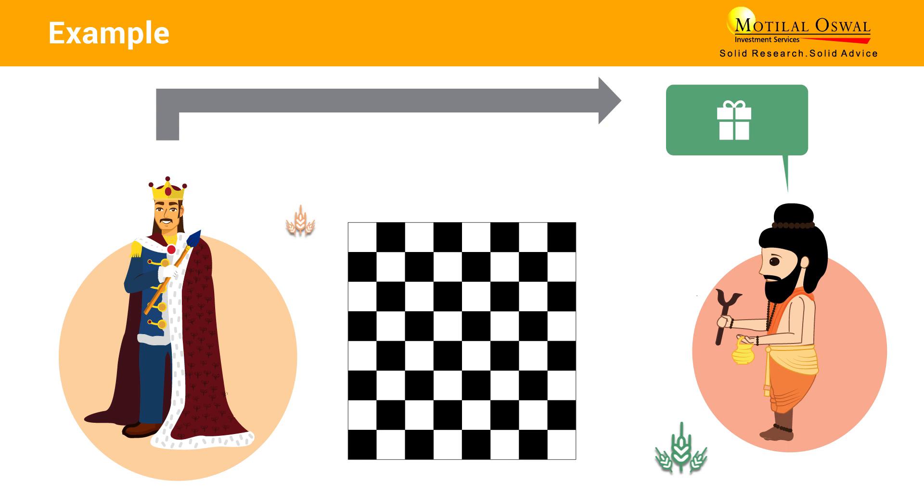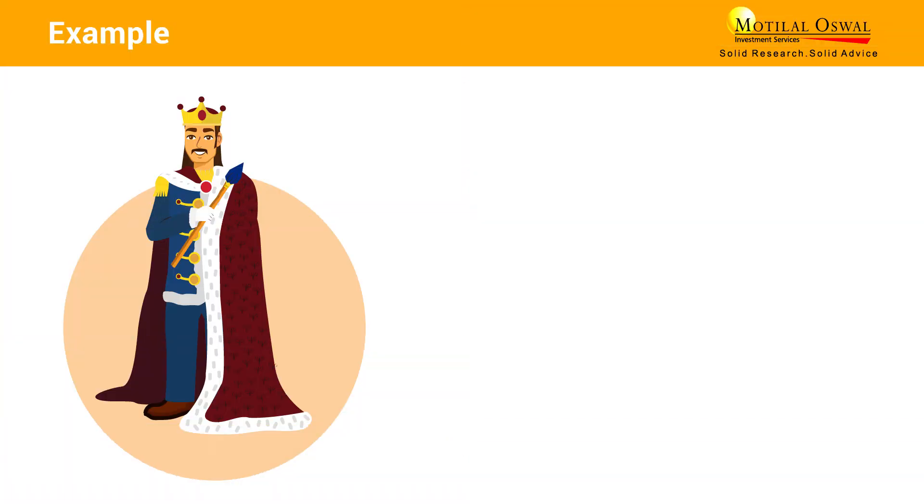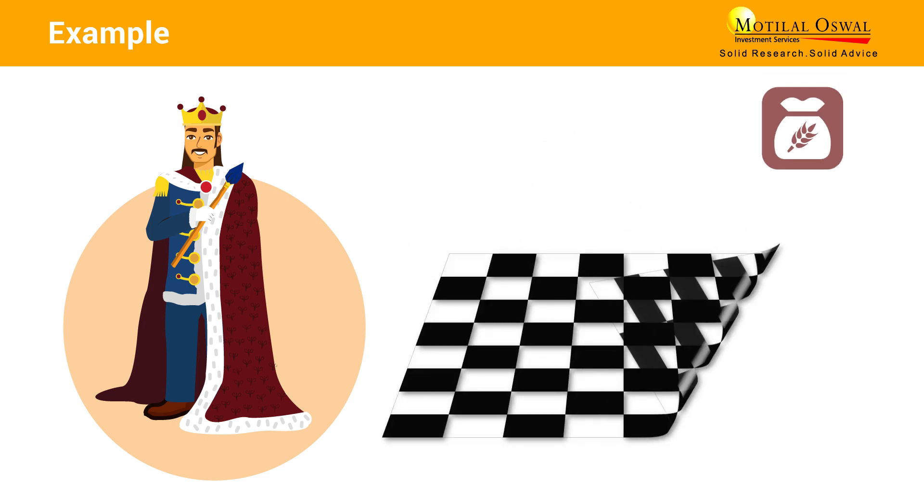The king was to put a single grain of rice on the first chess square, double it on every consequent one. Having lost the game and being a man of his word, the king ordered a bag of rice to be brought to the chessboard. Then he started placing rice grains according to the arrangement.